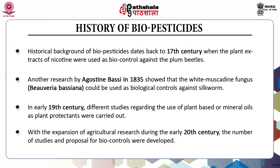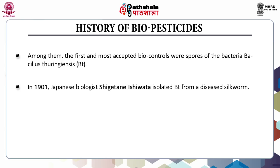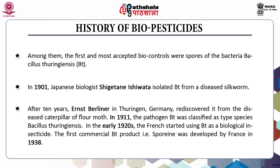With the expansion of agricultural research during the early 20th century, the number of studies and proposals for biocontrols were developed. Among them, the first and most accepted biocontrols were spores of the bacteria Bacillus thuringiensis. In 1901, Japanese biologist Schichten Ishiwata isolated Bt (Bacillus thuringiensis) from a diseased silkworm. After 10 years, Ernst Berliner in Thuringia, Germany rediscovered it from the diseased caterpillar of flour moth.